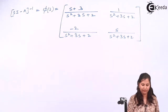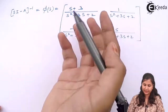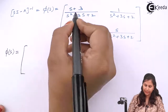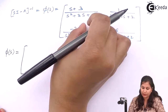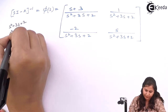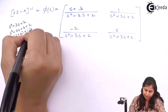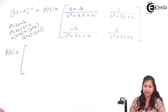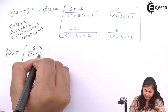We can further simplify by factoring the denominator. The quadratic s² + 3s + 2 factors into (s+1)(s+2). So for example the top-left element becomes (s+3) over (s+1)(s+2).